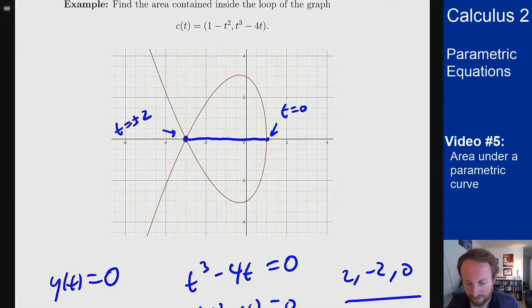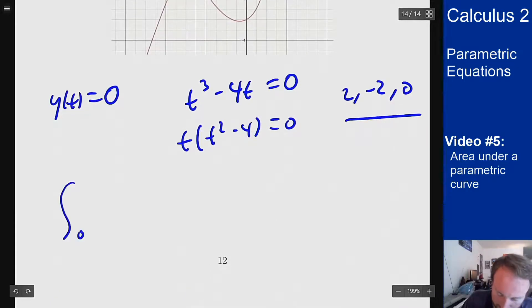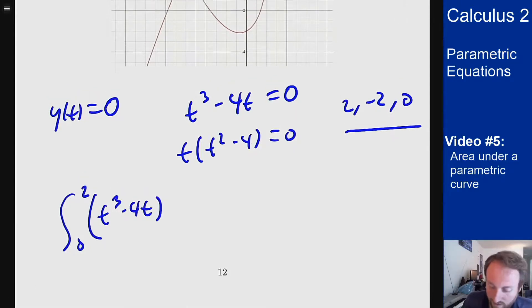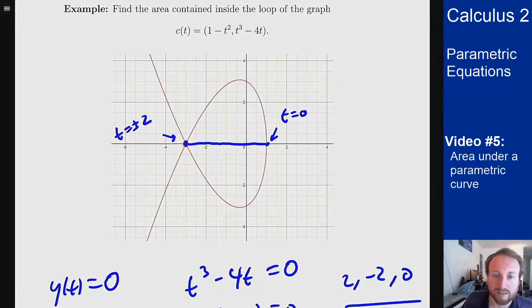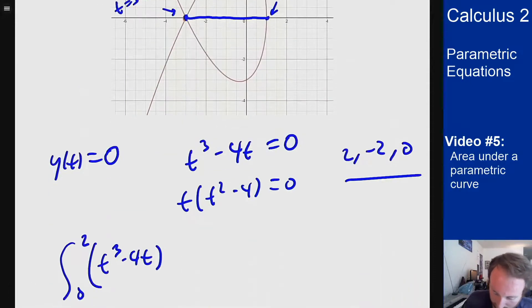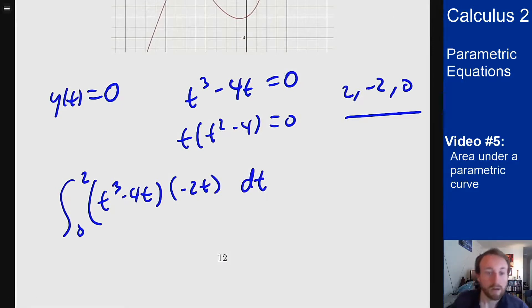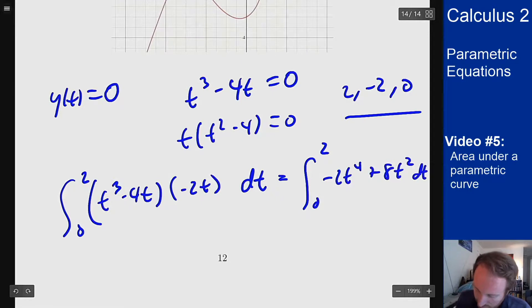So let's set up the integral. The integral should be integral from zero to two of y of t, which is t cubed minus 4t, times x prime. x was 1 minus t squared, so x prime is minus 2t dt. We can then expand this out and integrate. This will be the integral from zero to two of minus 2t to the fourth plus 8t squared dt. The antiderivative is minus two fifths t to the fifth plus eight thirds t cubed from zero to two.